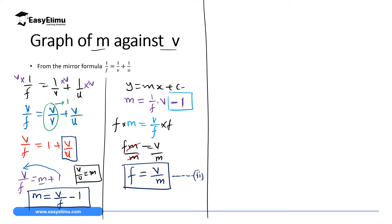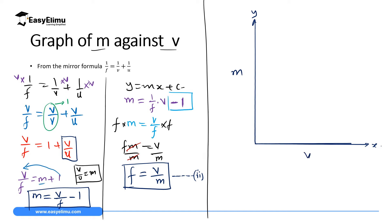This is the theoretical way of finding the focal length from the mirror formula. If we sketch a graph of magnification against image distance v on a Cartesian plane, we have the y-axis (magnification) and the x-axis (image distance). From our equation, this graph will cut the y-axis at negative 1.